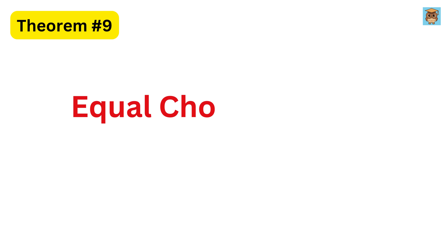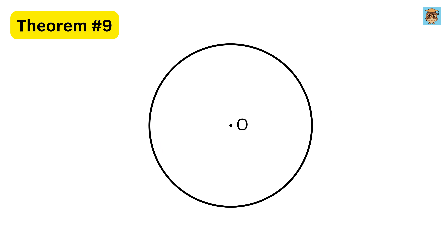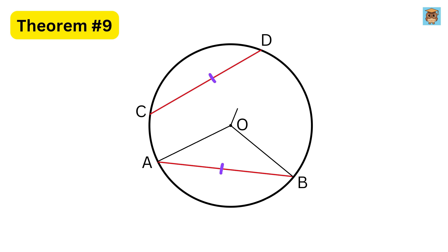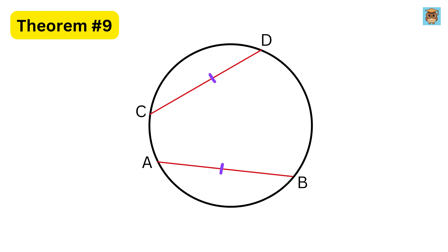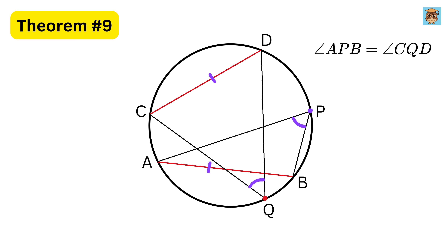Theorem nine: equal chords equal angles theorem. Suppose we have a circle with center O and two chords AB and CD of equal length. If we draw lines from O to the endpoints of both chords, then the angles AOB and COD at the center will be equal. Similarly, if we take any point P on the circumference and connect it to A and B to form angle APB, and another point Q connected to C and D to form angle CQD, then these two angles will also be equal.